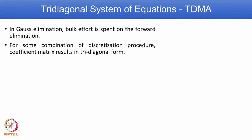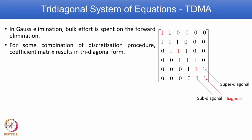We also learned different discretization procedures, for example central differencing, forward differencing, backward differencing, pure upwinding, quick, and combinations. Whatever method you follow, for some combinations the coefficient matrix will result in what is known as a tri-diagonal matrix. We have already seen in the previous class diagonal matrix, tri-diagonal matrix, and pentadiagonal matrix.